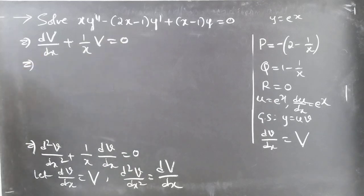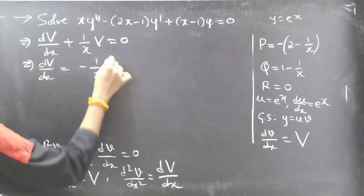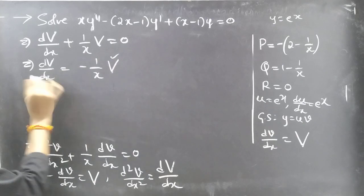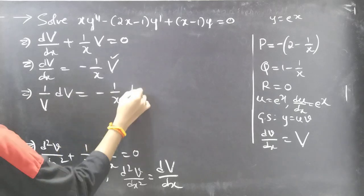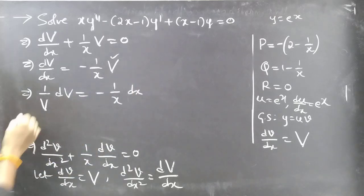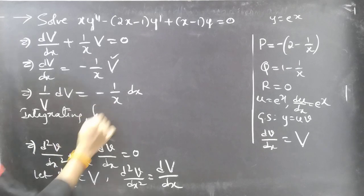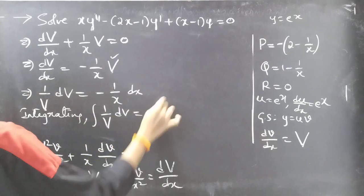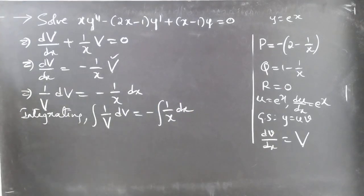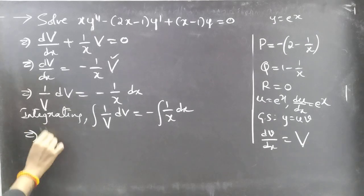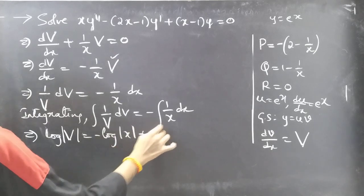Let dv/dx = V, so d²v/dx² = dV/dx. The equation becomes dV/dx + (1/x)·V = 0. Taking the second term to the RHS: dV/dx = −(1/x)·V. Separating variables: (1/V)·dV = −(1/x)·dx. Integrating both sides: ∫(1/V)dV = −∫(1/x)dx, giving log|V| = −log|x| + c₁.